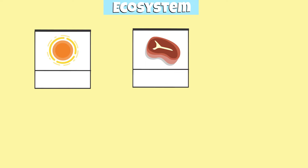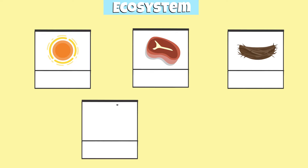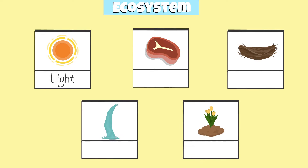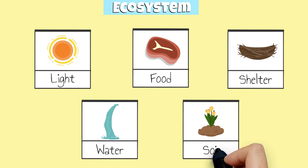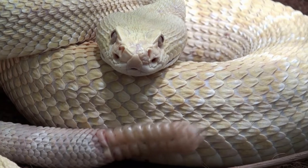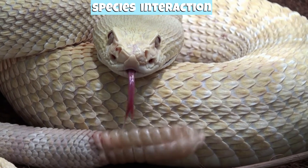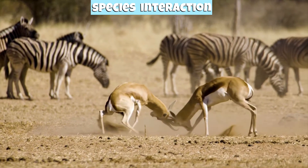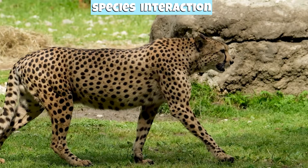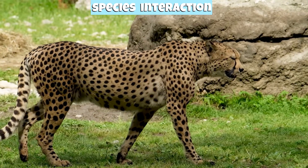In an ecosystem, there are limited resources, such as light, food, shelter, water, and soil. Because of this, different organisms and species compete with each other for these resources to survive.